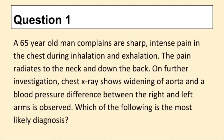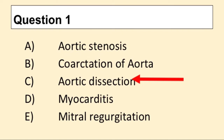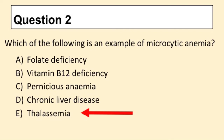Question 1. A 65-year-old man complains of sharp, intense pain in the chest during inhalation and exhalation. The pain radiates to the neck and down the back. Chest x-ray shows widening of the aorta and a blood pressure difference between arms. The answer is C: aortic dissection. Question 2: which of the following is an example of microcytic anemia? The answer is E: thalassemia.